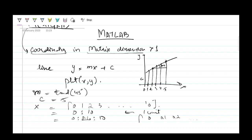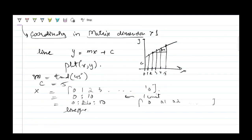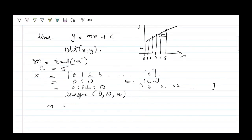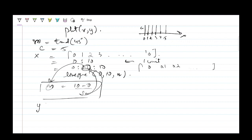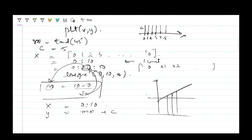There's another command, linspace, where you mention the first number, the last number, and the number of points n. Number of points can be calculated as (last − first) / spacing. So if x goes from 0 to 10, then y = mx + c gives you your plot.